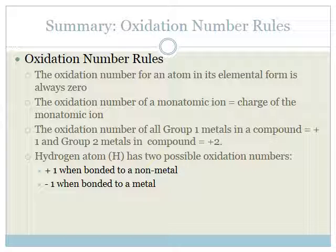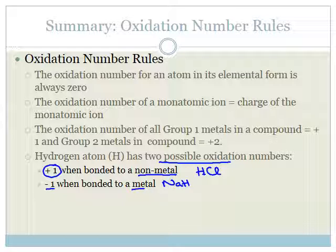Hydrogen has two possible oxidation numbers depending on what it's bonded with. If bonded to a nonmetal — for example in hydrogen chloride — it has a plus one oxidation number. Whereas if bonded to a metal — for example in sodium hydride — it has a minus one. You'll also notice that when bonded to a nonmetal, hydrogen is written first in the compound, giving plus one; when bonded to a metal, it's written at the back, giving minus one.